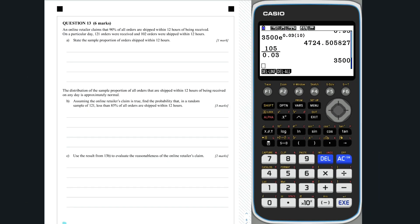Question 13. If an online retailer claims that 90% of all orders are shipped within 12 hours, they are saying in the long run, their internal system will result in 90% of orders being sent within 12 hours of being received.